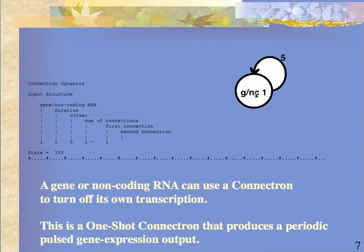A one-shot is a DNA region — gene coding or non-coding — that turns itself off for a certain length of time: five units of time. So it's on (hash mark), then there are five dots, then a hash mark, then five dots. There's a periodicity of five, denoted by this number here.